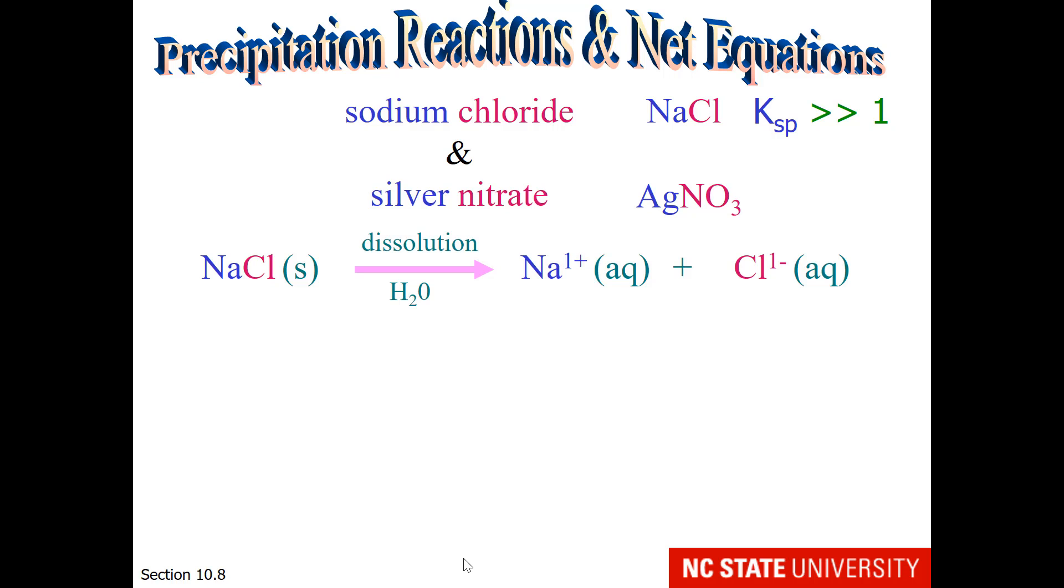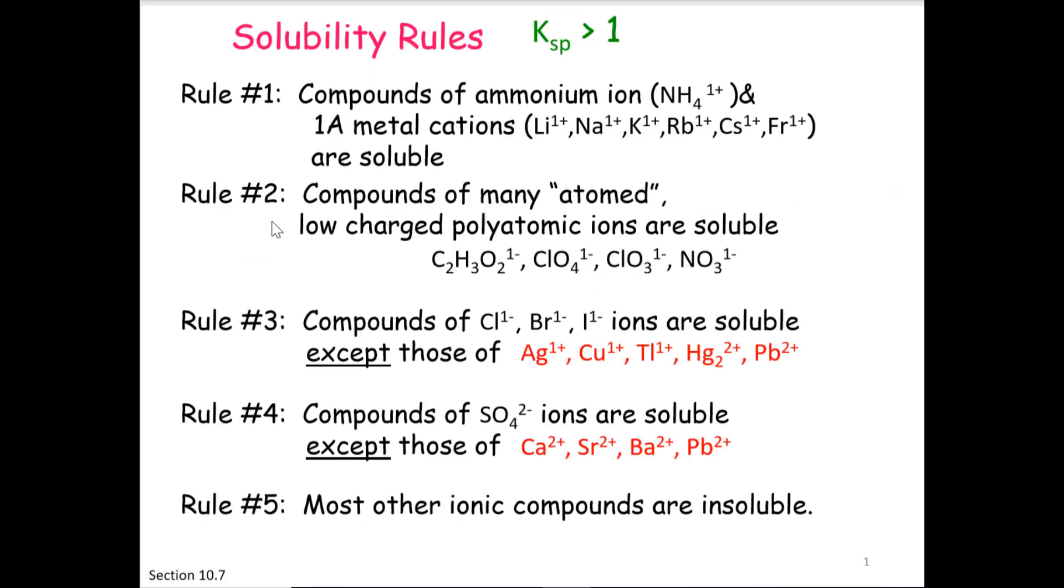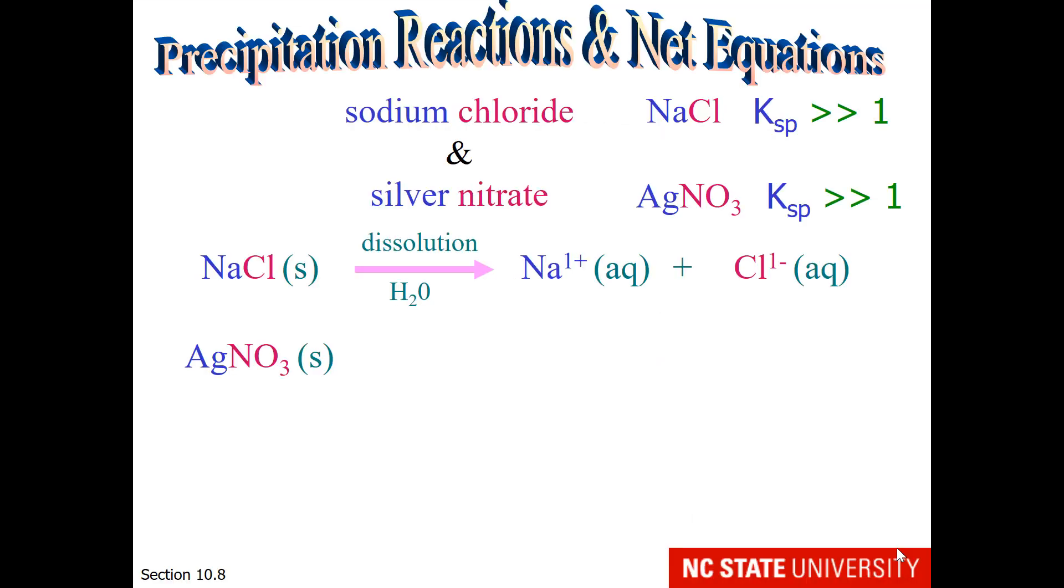The Ksp for silver nitrate is also much greater than 1. If we check here in the solubility rules, nitrate is a many-atomed low-charge polyatomic ion that with silver 1+ is soluble. If we had silver nitrate solid and placed it in water, we would get silver ion and nitrate ion in the aqueous state.